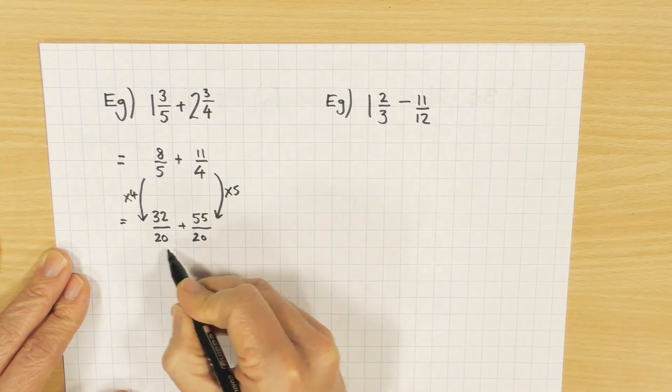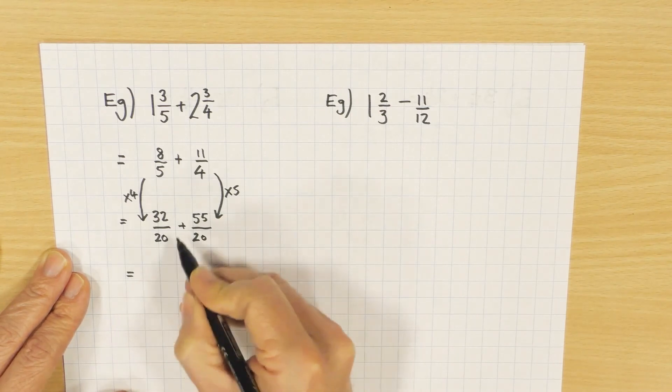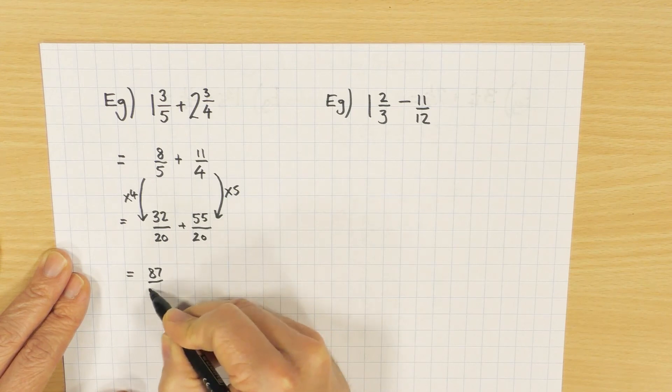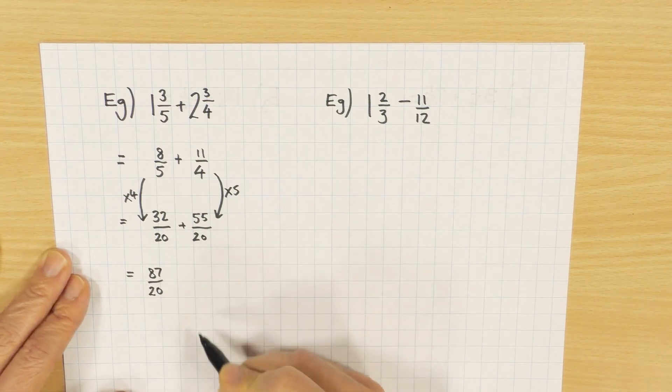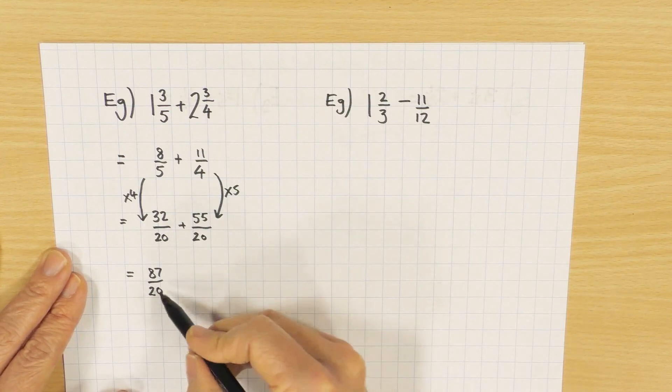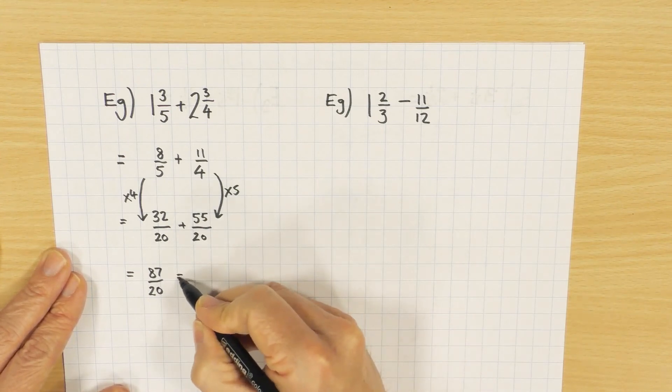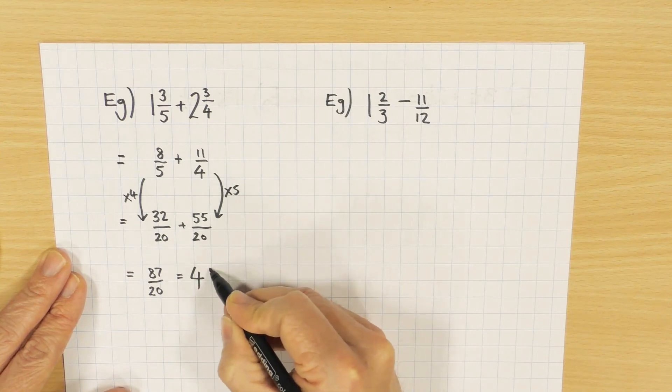The denominators, the bottoms, are the same. We just add the tops. 87 over 20. It's a good answer. We might try and make it as a mixed number. How many 20s go into 87? That's okay. Four times, remainder seven. The bottom number doesn't change.